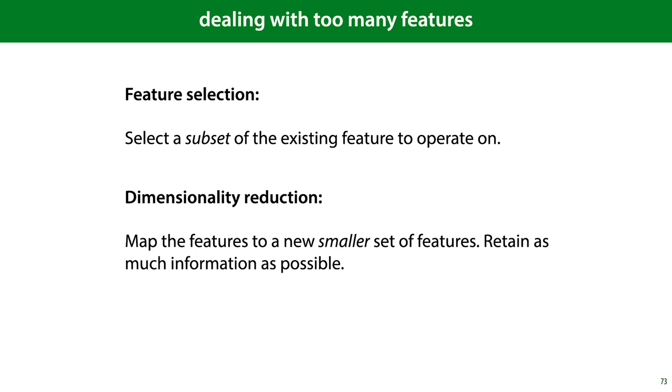This has the benefit that the features retain their meaning and are still interpretable, and we call this feature selection. The alternative is to take information from all features and map them to a new smaller set of derived features, which retain as much of the original information as possible. This is called dimensionality reduction. In this case, the new features don't always have an obvious meaning, but they may still work well for machine learning purposes.